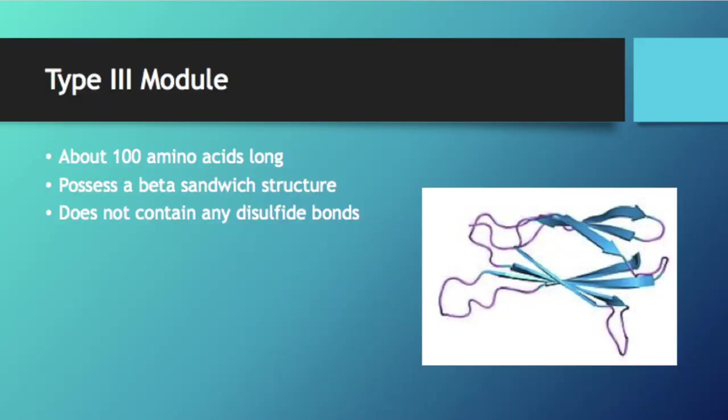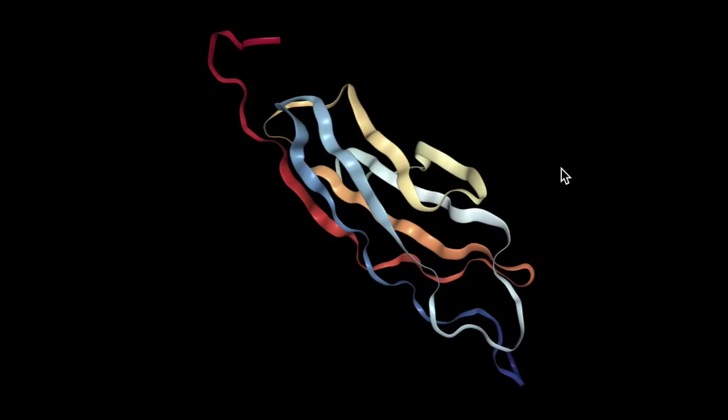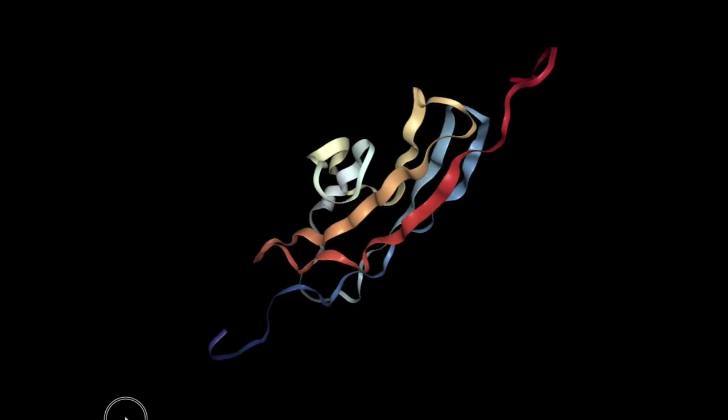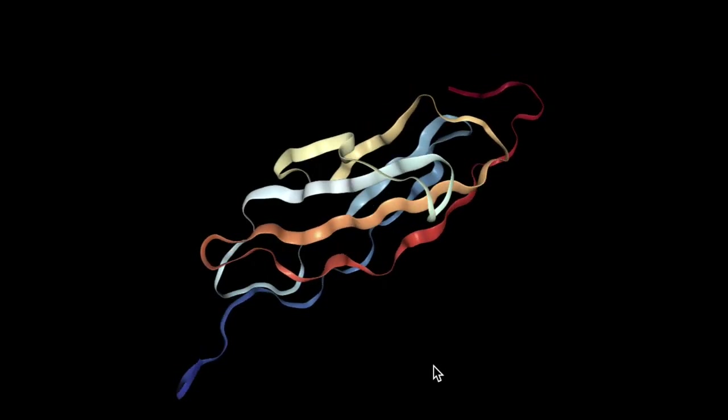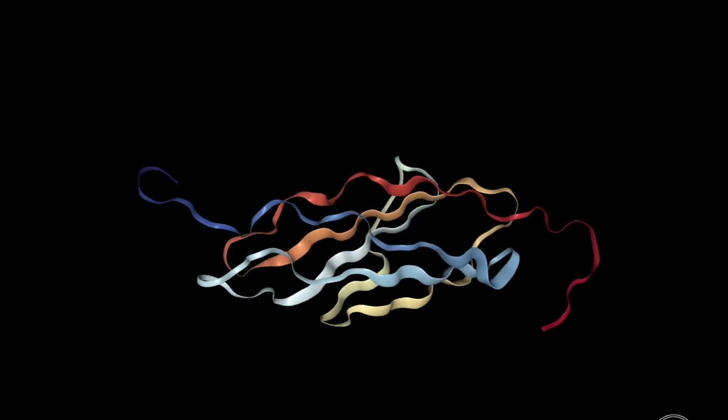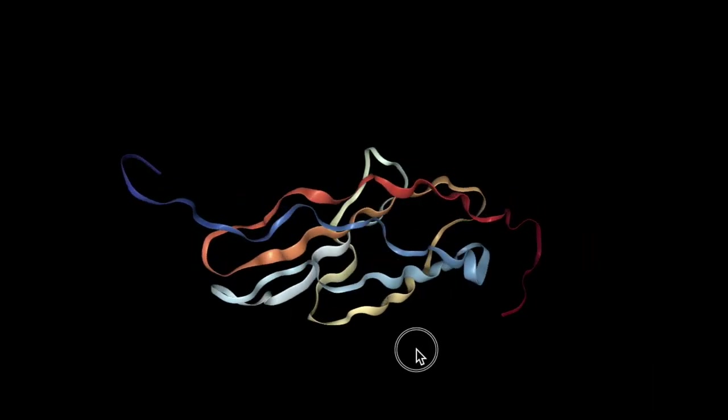The type 3 module of Fibronectin is about 100 amino acids long. Fibronectin type 3 repeats are both the largest and most common of the Fibronectin subdomains. Structures of the individual type 3 domains have revealed a conserved beta sandwich fold with one beta sheet containing four strands and the other sheet containing three strands.